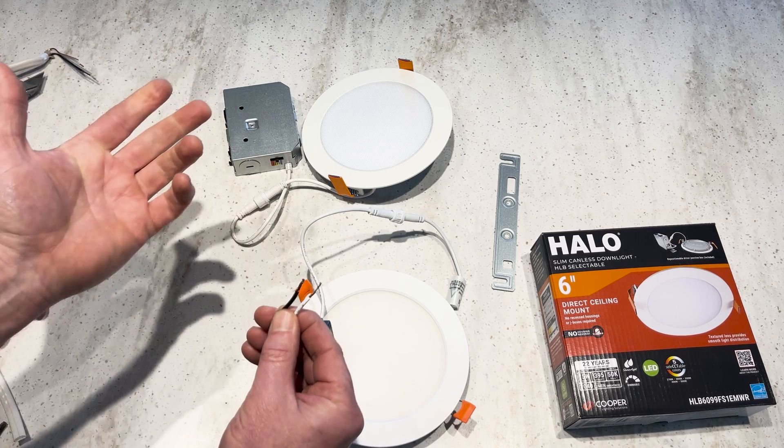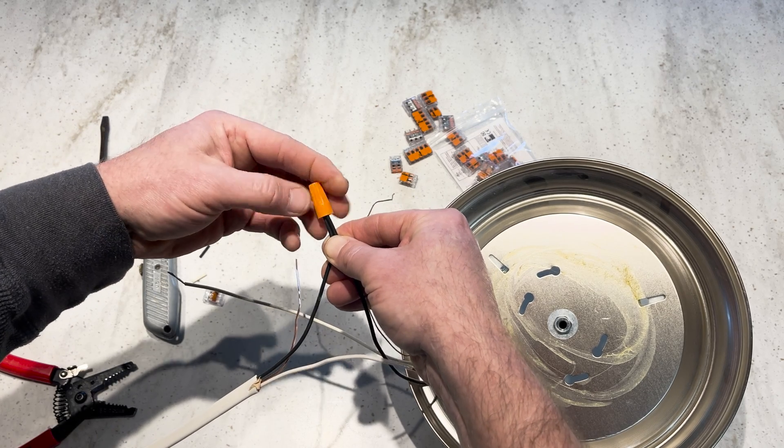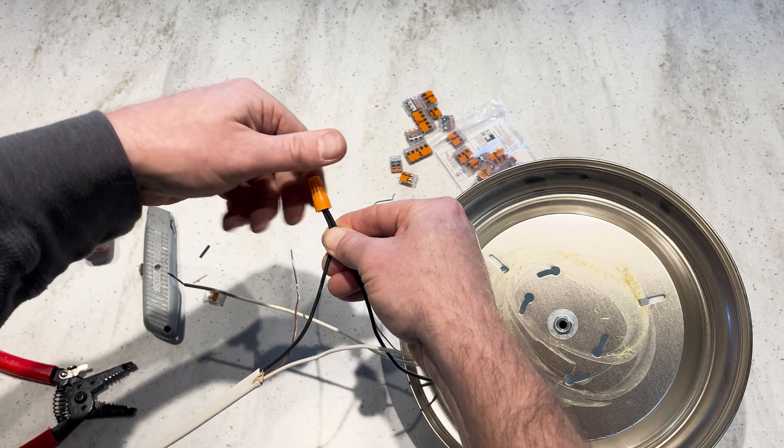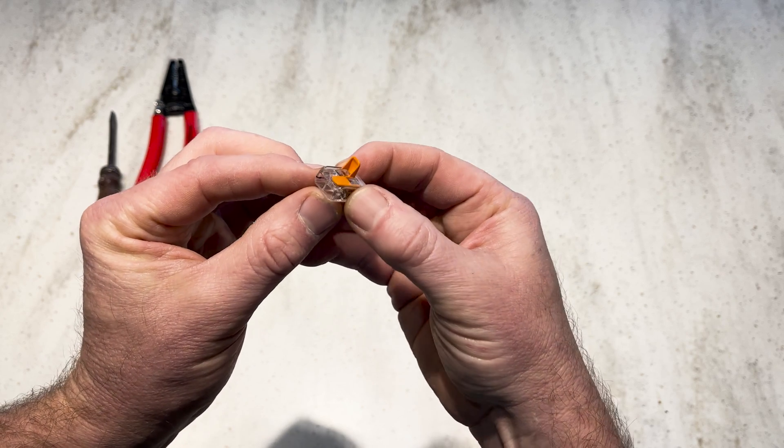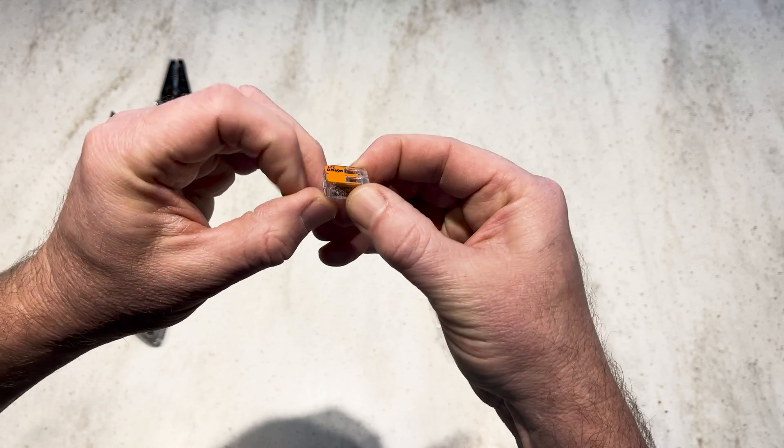If your canless lights don't come with built-in connectors, you could of course also use traditional wire nuts or my new favorite connector, Wago lever nuts, to connect your Romex to your lights.